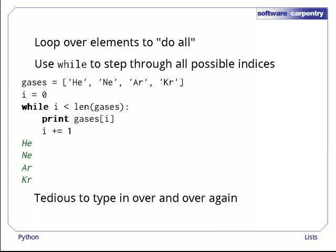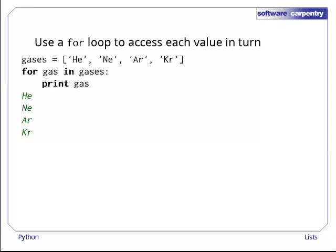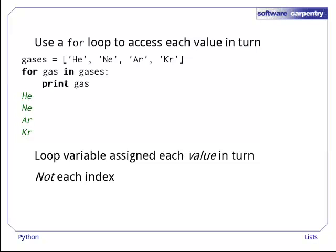This works, but it's tedious to type it all in time after time. And it's all too easy to forget to increment the loop index or to get the loop control condition wrong. To make things simpler, Python provides a second kind of loop called a for loop that gives the program each list element in turn. Here, for example, we do in one line for gas in gases what took three lines in the previous program. As you can see, the for loop variable is assigned each element of the list in turn, not each index. Python does this because it's the most common case. Most of the time that a program wants to do something with each list element, it doesn't care what that element's location is.